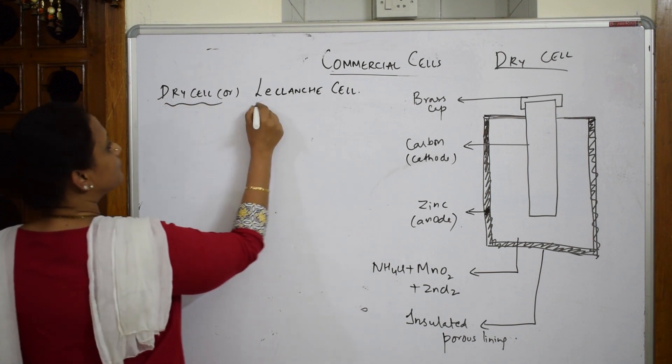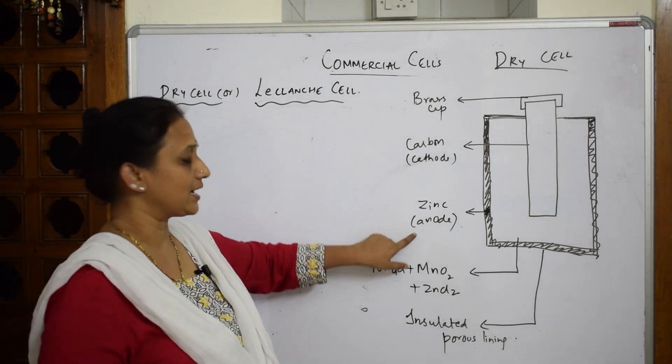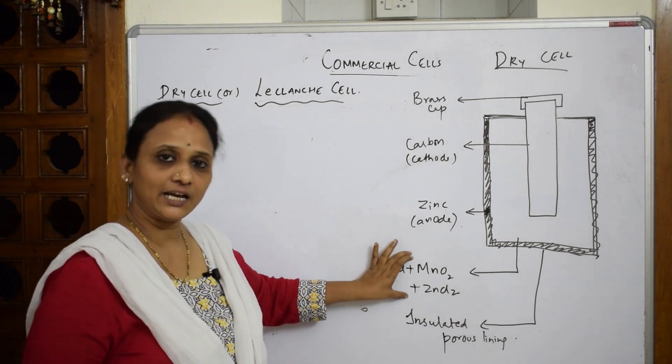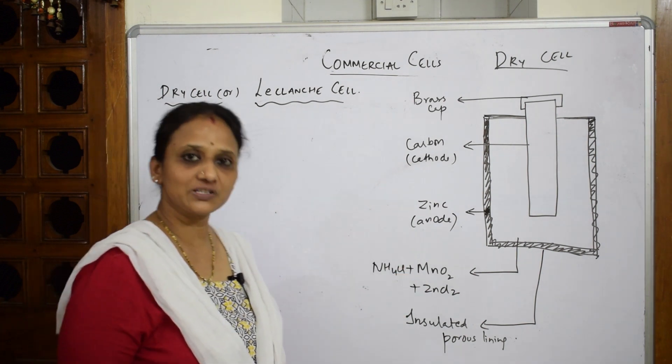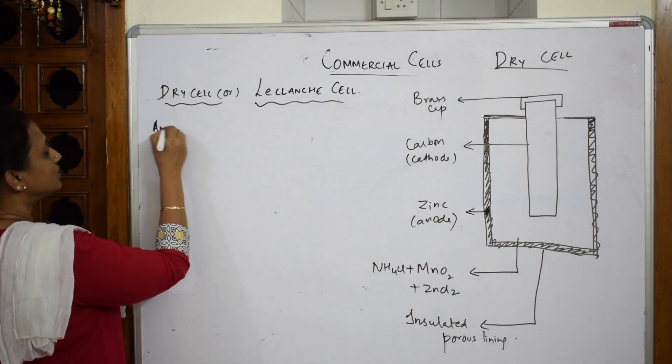Whenever you're writing dry cell, you have to speak in terms of anode, cathode, electrolytic solution, and also if there's salt bridges. In dry cell, basically the anode which we are going to take here is zinc. Zinc acts as an anode.